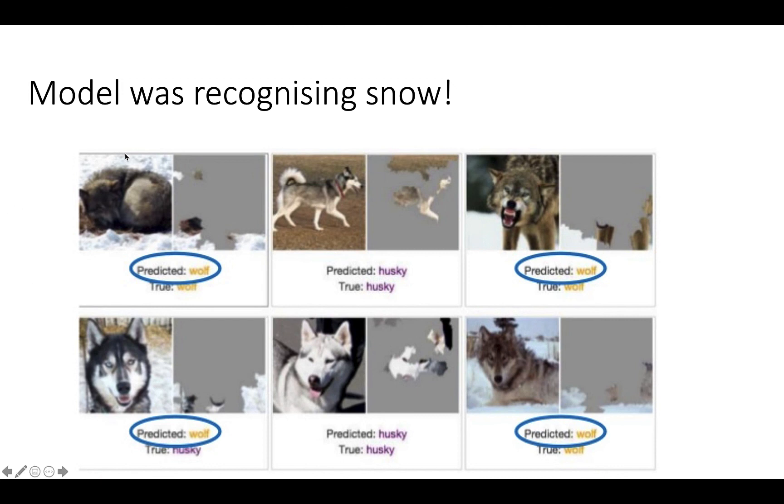They analyzed the neural network to see what it was concentrating on. It wasn't concentrating on the dogs at all. It was concentrating on the snow. It predicted this was a wolf simply because there was snow in the background. This is a very common problem with machine learning models. There's been other situations where a machine learning model was trained to recognize tanks. When it was tried in the field, it didn't recognize them well at all. That was because all of the pictures were taken when it was a sunny day with few clouds, and that's what it was recognizing. When they tested it, it was on an overcast day. It mistakenly decided that wasn't a tank because it couldn't see the clear sky.